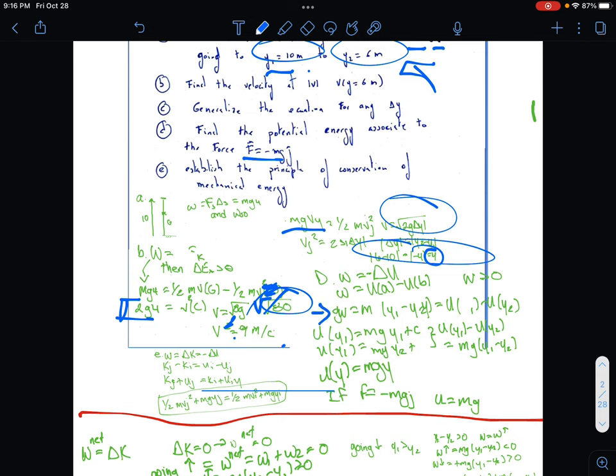Pretty much this is where we get all of our steps: U(y1) equals mgy2 plus C, and then U(y2) equals mg times y2 plus C.